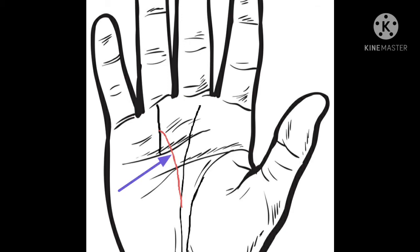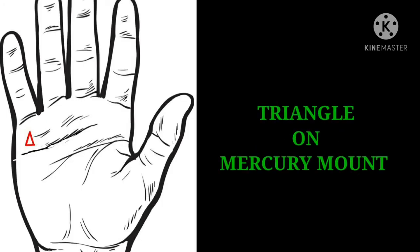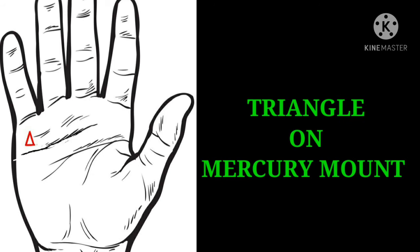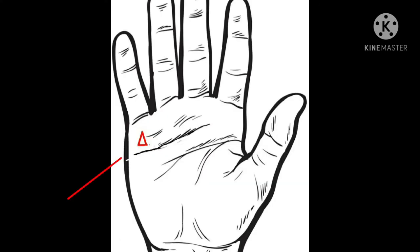Triangle on mercury mount. If the mercury mount, which is called the lower part of the smallest finger of your palm, has the shape of a triangle being formed, then it is said that the person would have been happy to have a government job in the near future, and soon he gets a higher rank too.